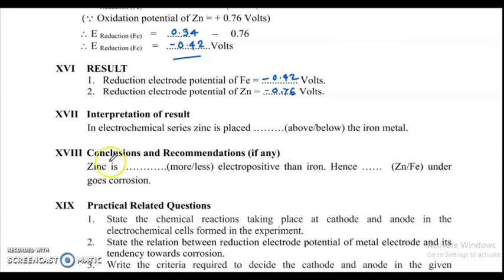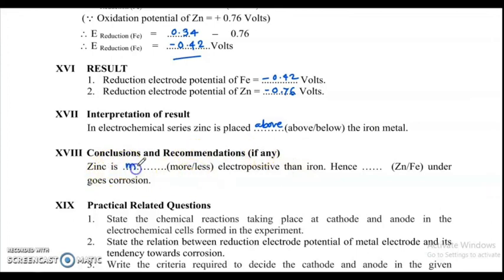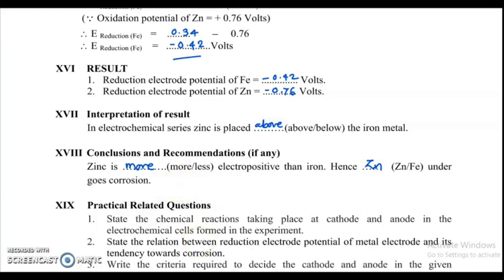Interpretation of result: In the electrochemical series, zinc is placed above iron. Conclusion and recommendation: Zinc is more electropositive than iron. Hence, zinc undergoes corrosion — therefore zinc protects iron. This is all about experiment number 7, electrode potential of iron. Thank you.